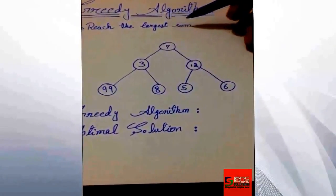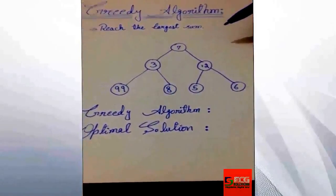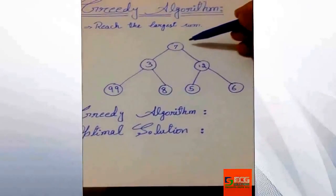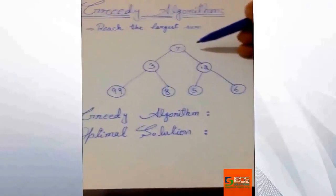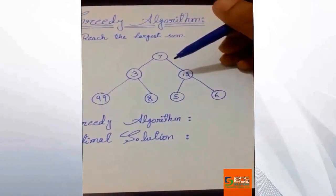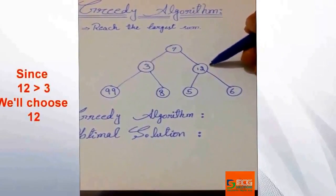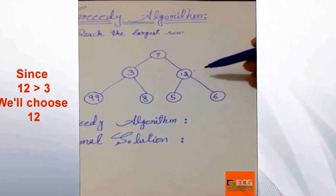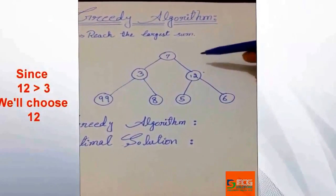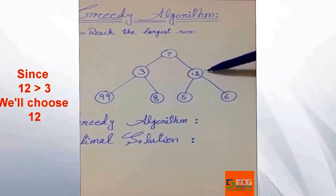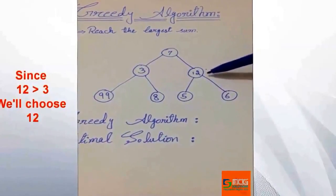If we take a look, here we'll make a decision between 3 and 12, and the greedy algorithm will choose 12 as it is the local optimal solution. Since we are going to find the largest sum in the tree, it will choose 12 because it is the biggest number between 3 and 12.